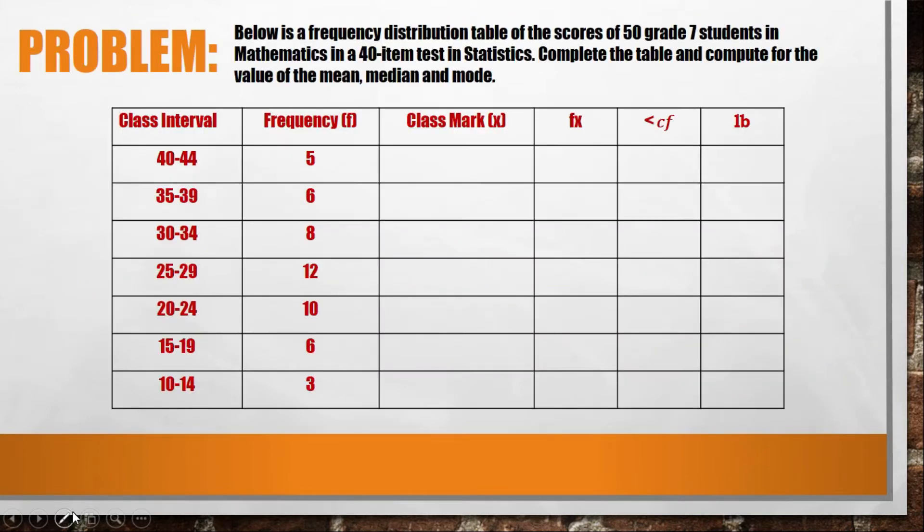Problem number one: Below is a frequency distribution table of the scores of 50 Grade 7 students in mathematics in a 40-item test in statistics. Complete the table and compute for the value of the mean, median, and mode. We will complete first the table before proceeding to the different formulas.